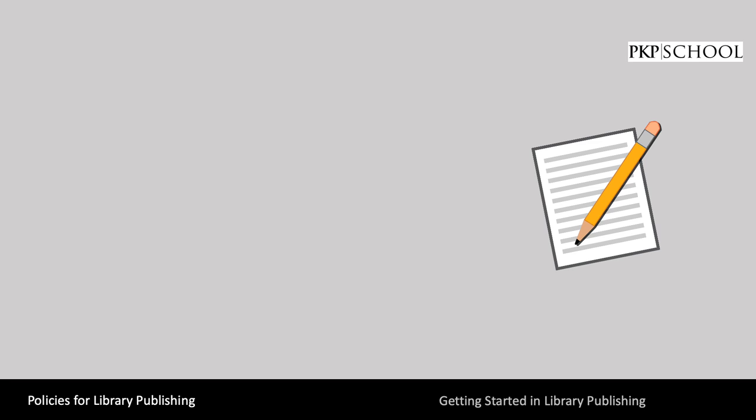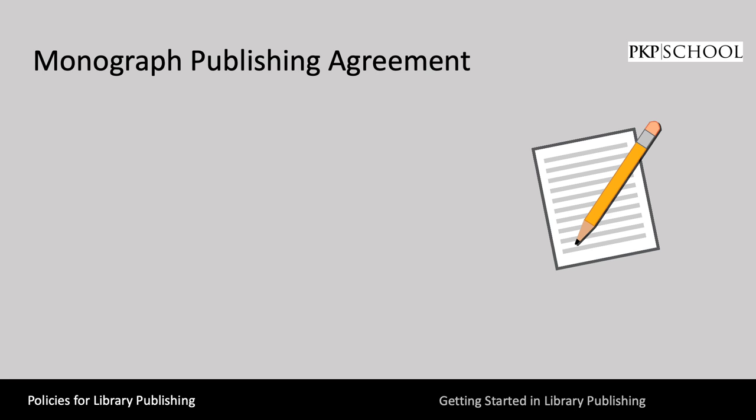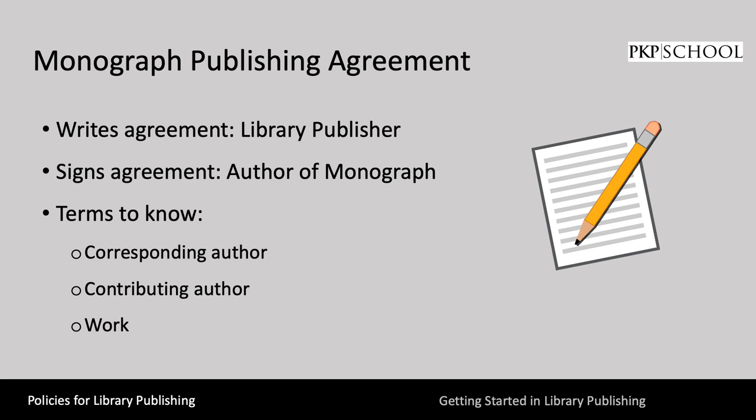The first agreement we'll discuss is the Monograph Publishing Agreement. The people involved in this agreement include the library publisher, who writes the agreement, and the author of the monograph, who signs the agreement. If there are multiple authors involved, there can be separate clauses in the agreement, or entirely separate agreements for each author. The library publisher will need to communicate with at least one author, called a corresponding author, who may be the editor in the case of edited volumes. Other authors are known as contributing authors, and all materials involved in the agreement, such as illustrations and recordings, are referred to as work.